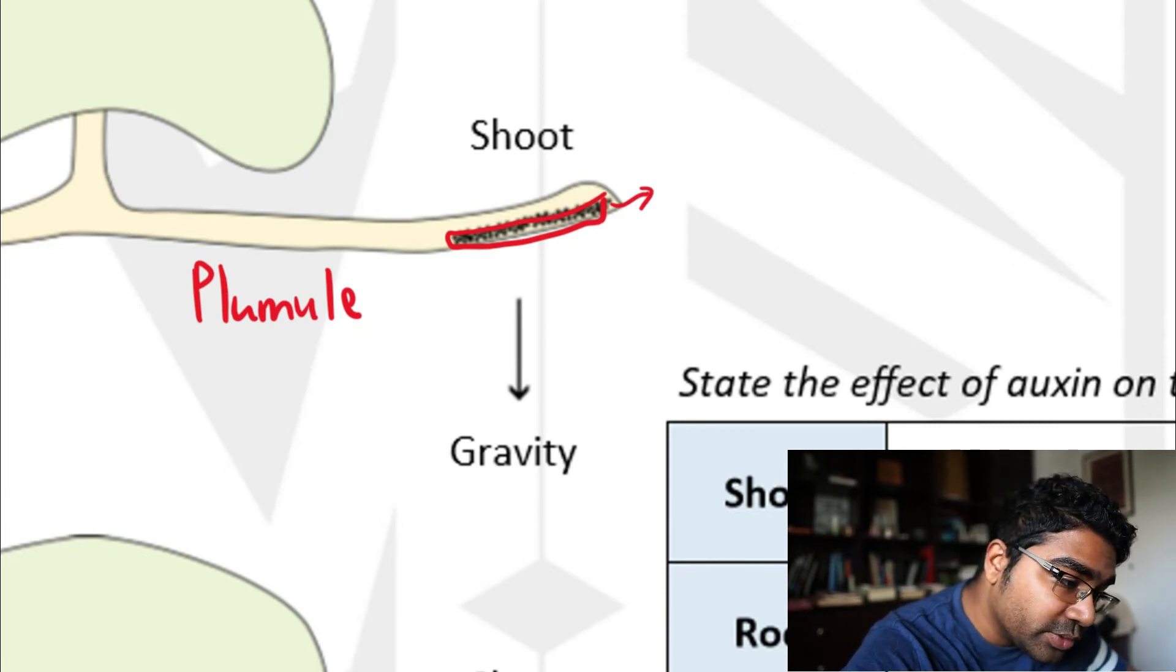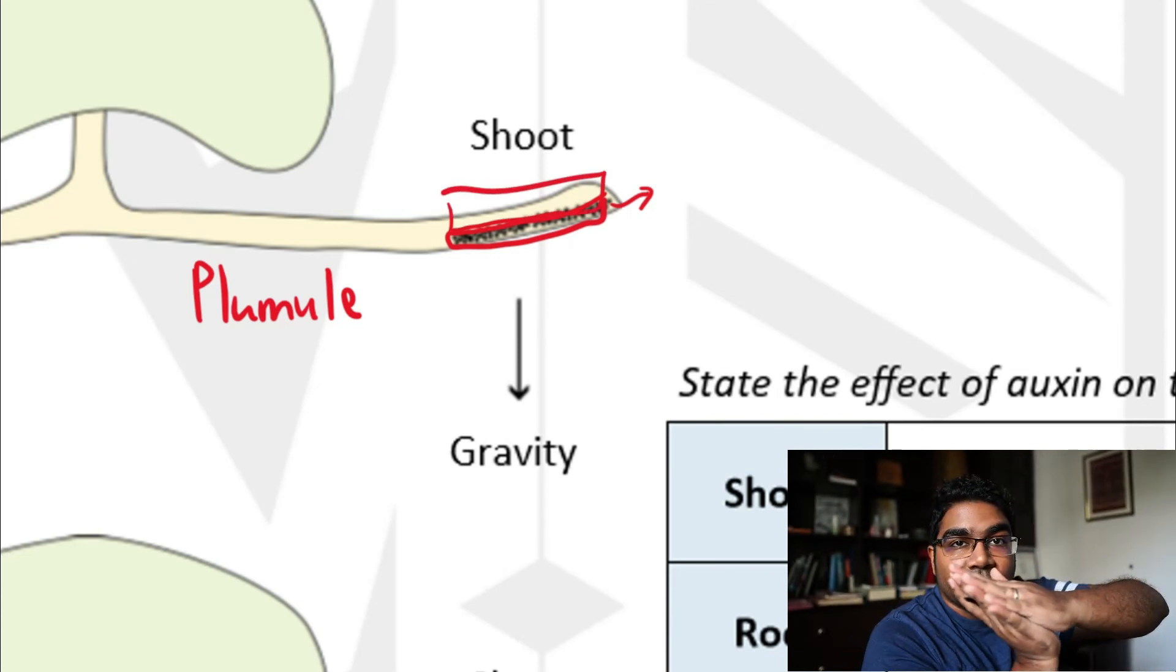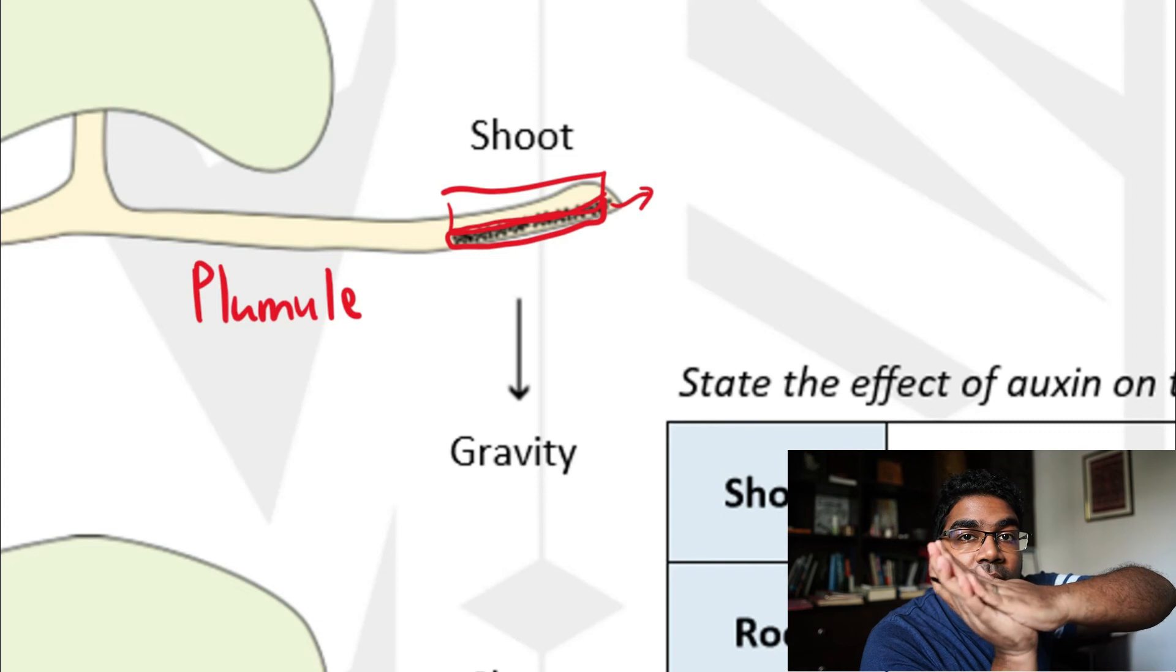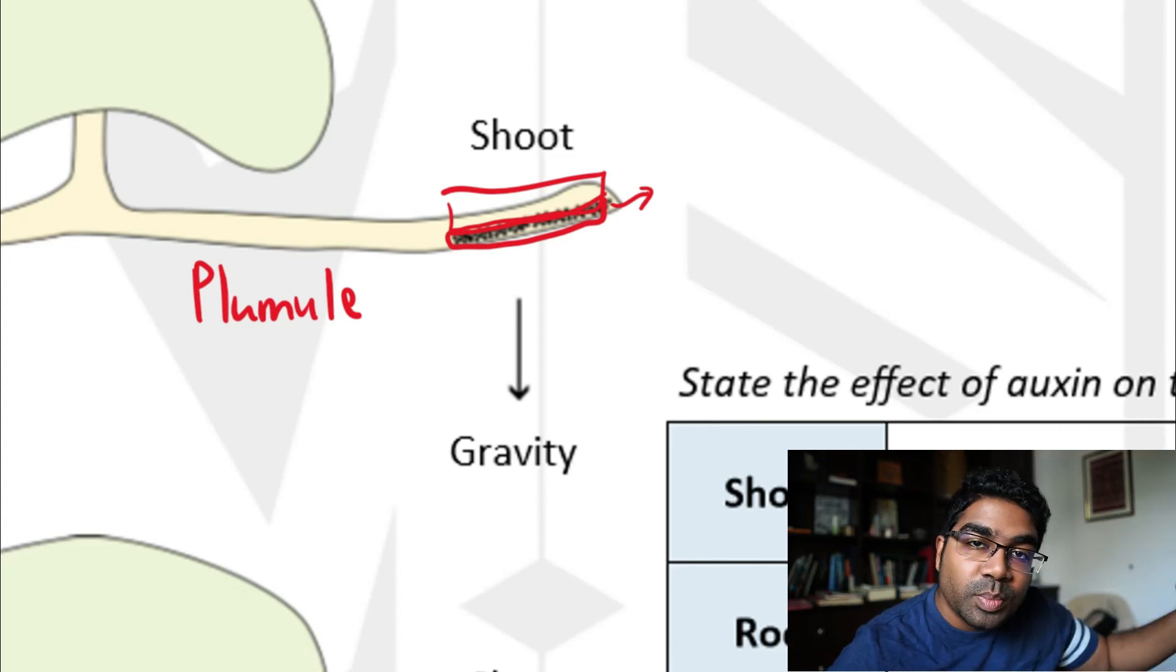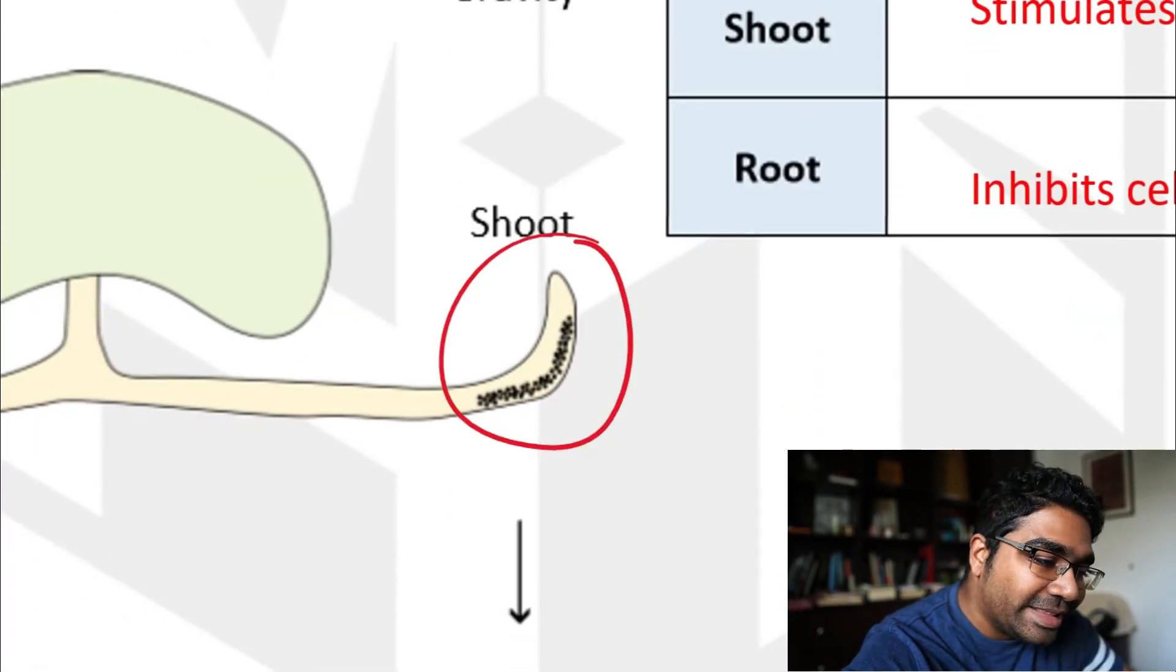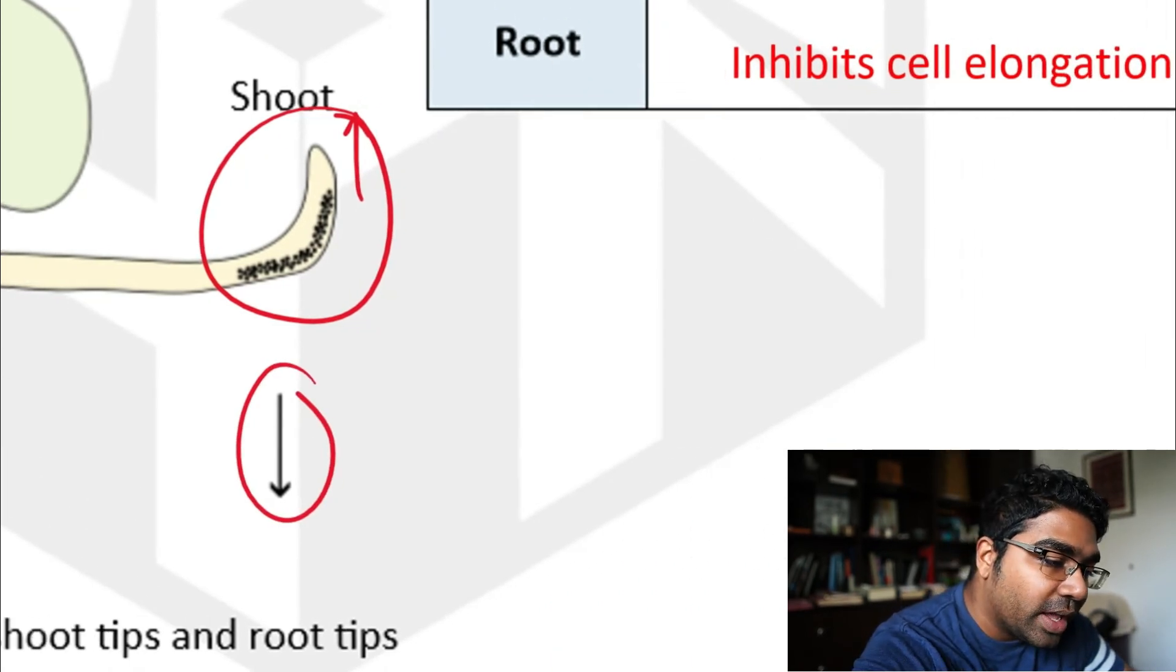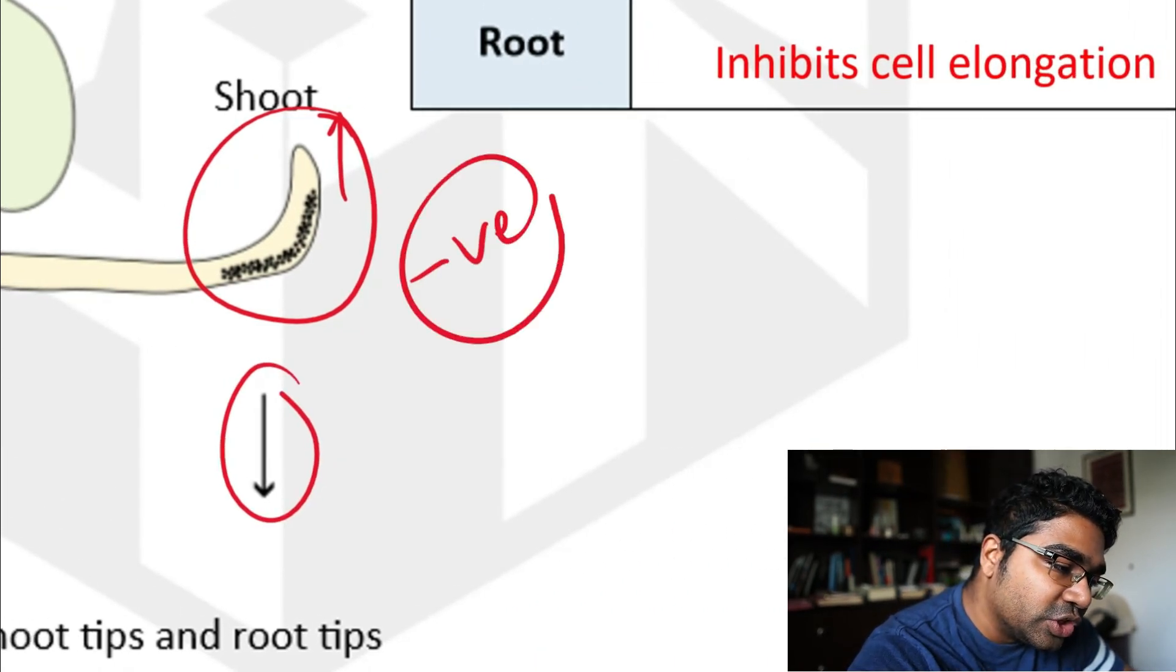This will cause greater growth at the bottom compared to the top, causing the whole shoot to bend upwards against gravity. So this is what happens. Since the direction of growth is opposite to the direction of the stimulus, this is known as negative geotropism.